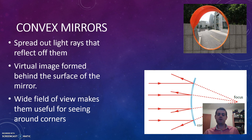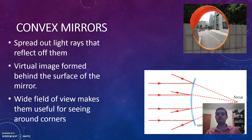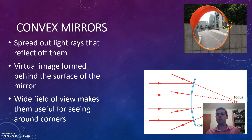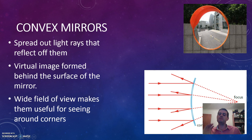Convex mirrors do the opposite of concave mirrors — the backside of the curve faces towards the light rays, curving outwards. When parallel light rays reflect off a convex mirror, they spread out in different directions and never meet, so they don't form a real image. However, tracing those reflected rays backwards, they meet at a virtual focus point behind the mirror surface — forming a virtual image, similar to plane mirrors. A common application is the convex mirror used at tight intersections so drivers can see around corners and avoid collisions. You also sometimes see small convex mirrors on car side mirrors to help see around blind spots.